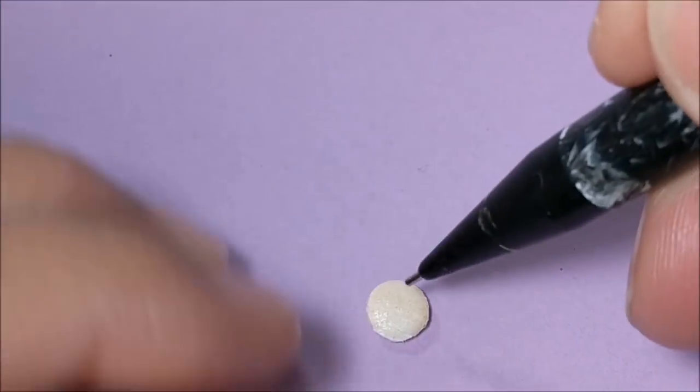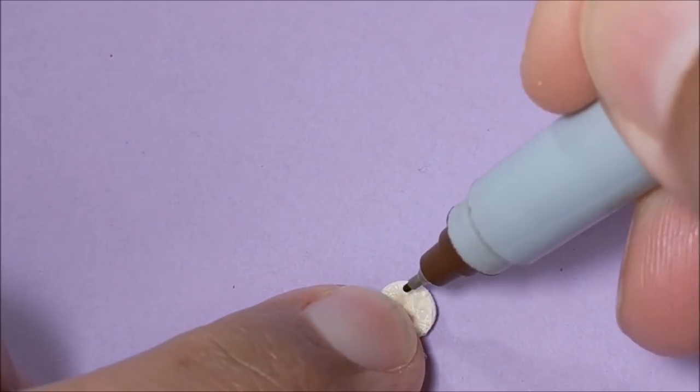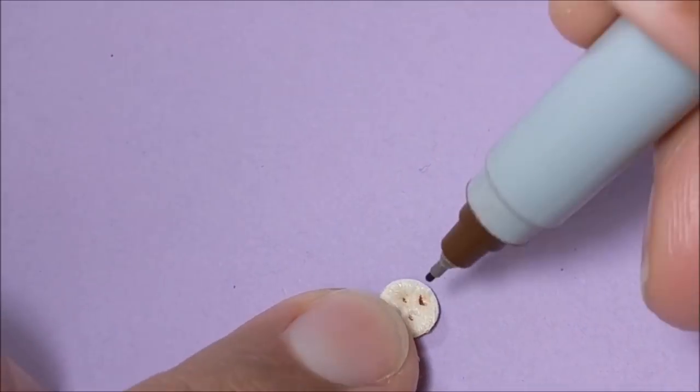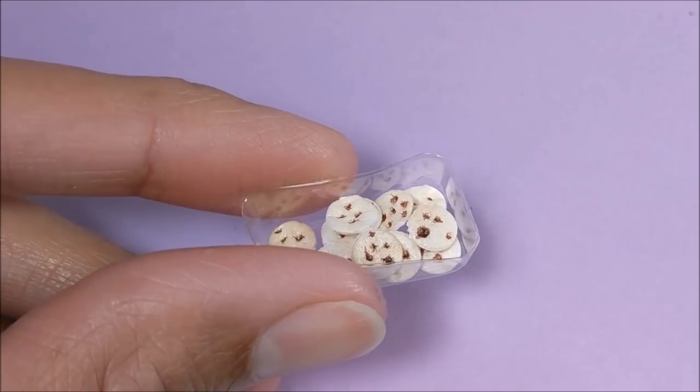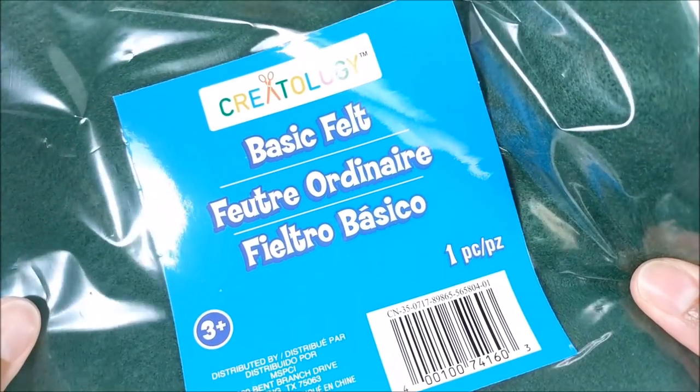And for the chocolate chip, I do the same thing but add a bit of marker. And for the sash and beret, I use green felt.